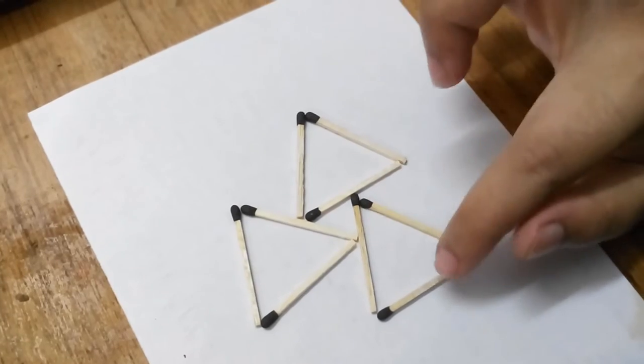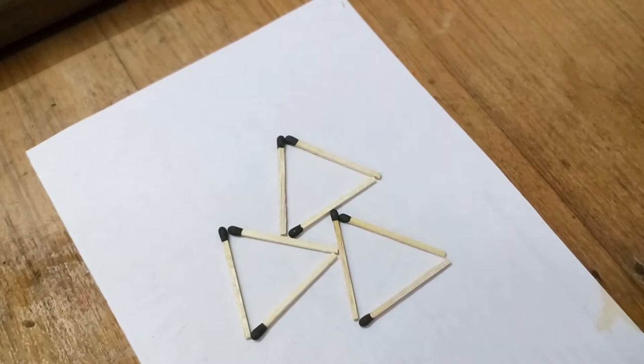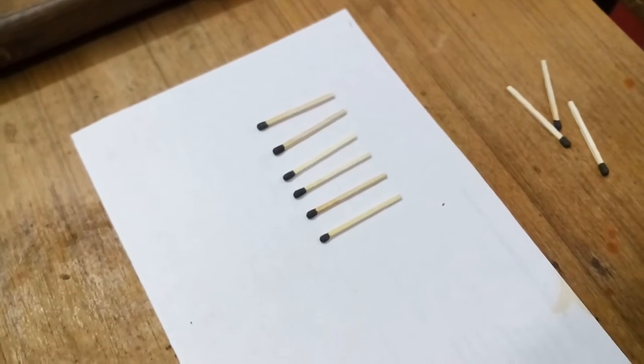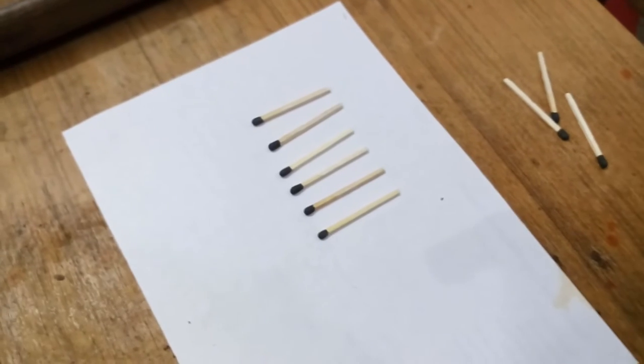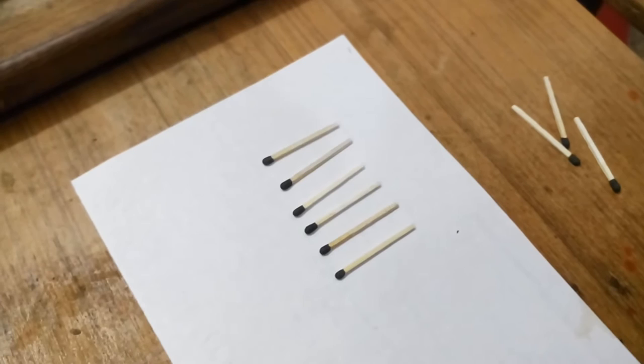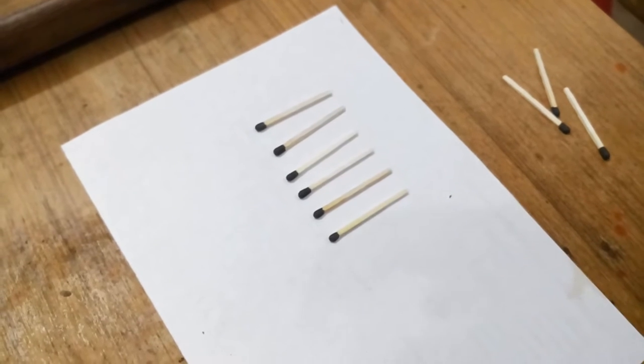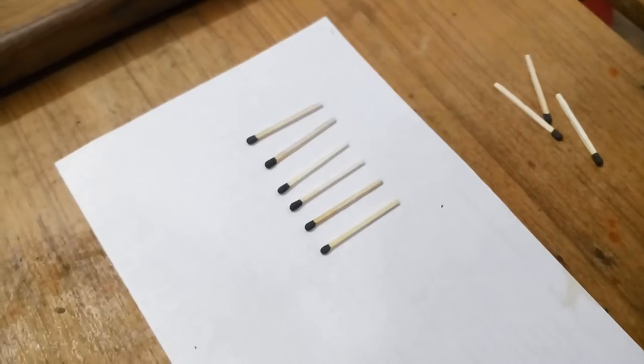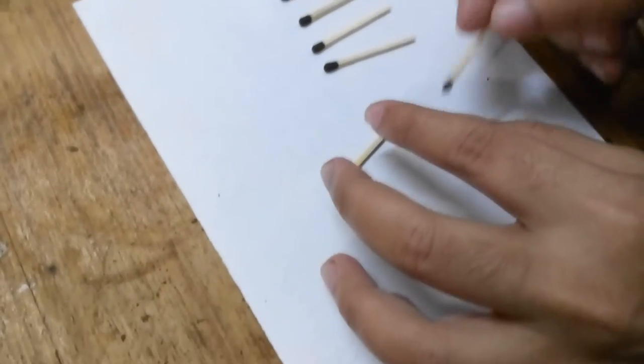Now the fourth one is really epic. Place six matches on a paper like this, and challenge your friends to arrange them in such a way that each match is touching all other matches. After they struggle again just like they did before and you got some money, do this simple process and you're going to win again.